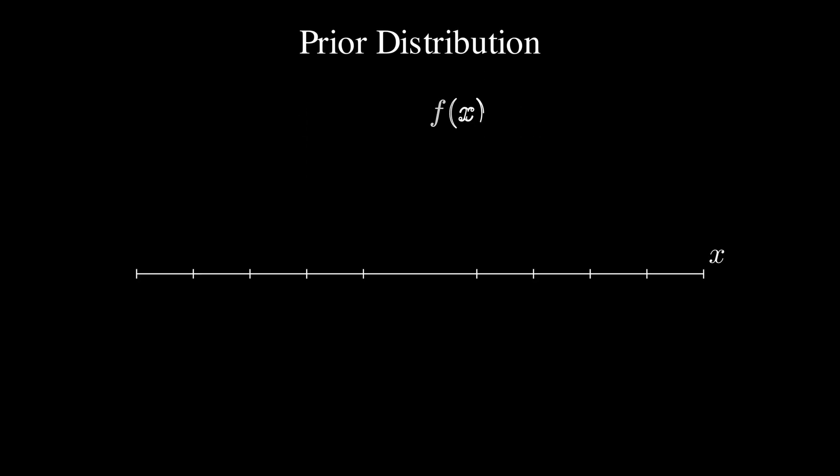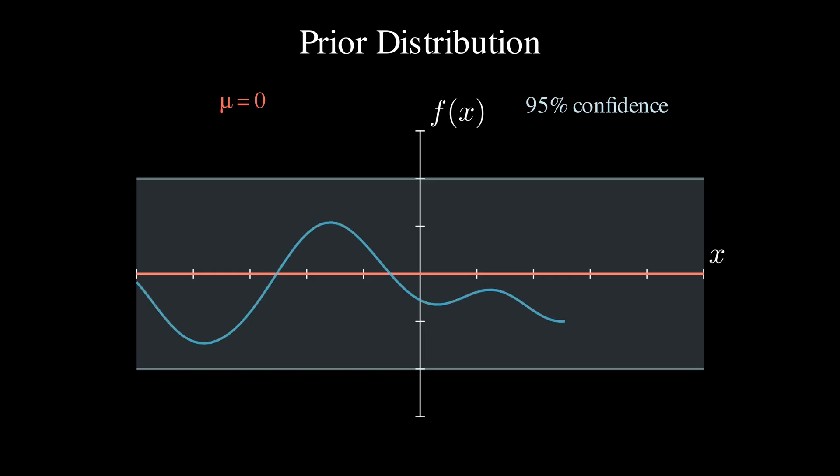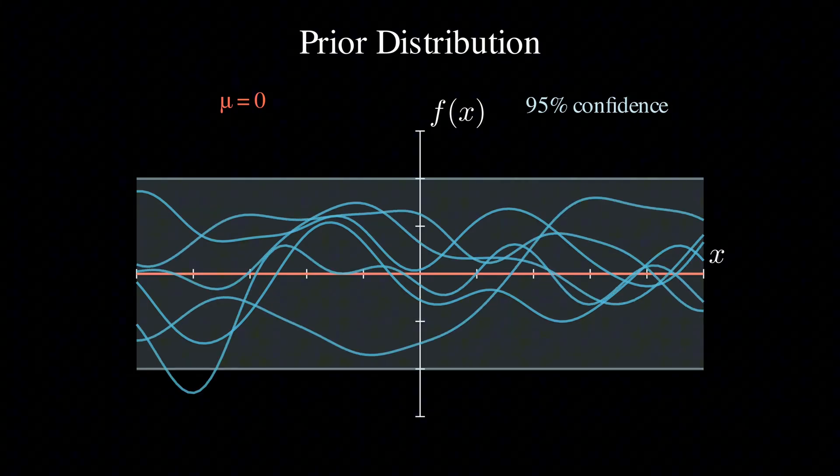Now let's talk about the prior distribution, which is a core concept in Gaussian processes. So, before we observe any data, we start with what we call a prior. For simplicity, we usually set our mean function to 0, that's this red line here. But what's really cool is that we also get these blue uncertain bands, showing us plus or minus 2 sigma around our prediction, which gives us a 95% confidence region for where our functions might be. Now, let me show you some examples from this prior distribution. See how they all wiggle around with those blue bands, that's simply how a function distribution looks like.